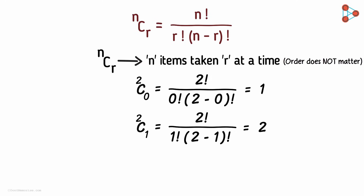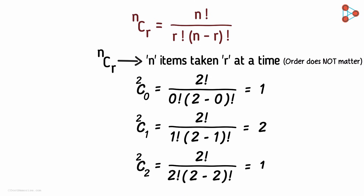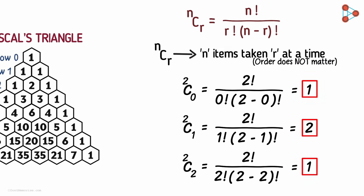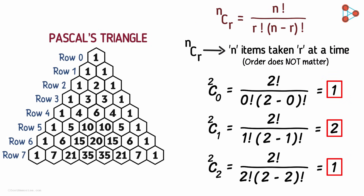Now try getting the value of 2C2 as well. We get it as 1. So we got the three values as 1, 2, 1. Now take a look at Pascal's triangle — we have these same values in the second row.